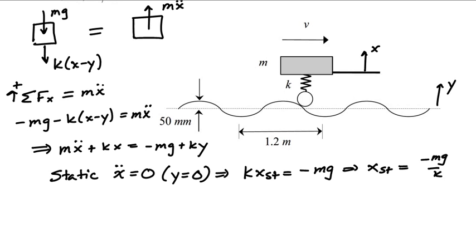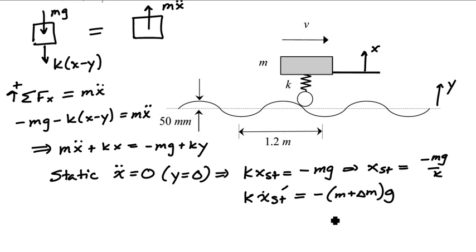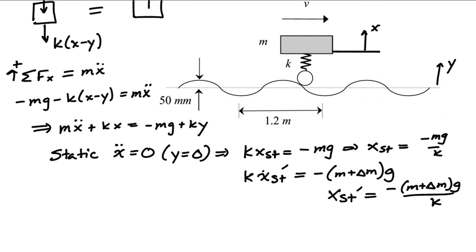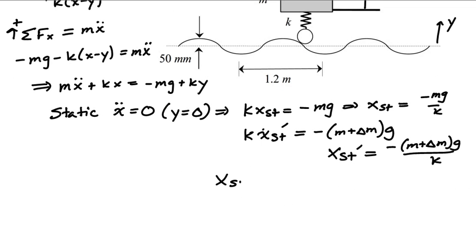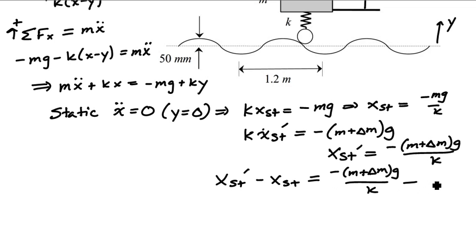We're also given that if we add some mass delta m, then k times x_static_prime equals minus (m plus delta m) times g, so x_static_prime equals minus (m plus delta m) times g divided by k. The additional sag created in the suspension equals x_static_prime minus x_static, which works out to delta m times g divided by k.